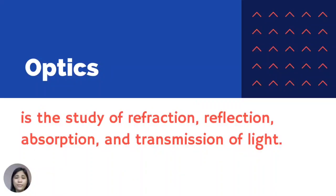To understand light further, you have to learn how it interacts with different objects. This branch of science is called optics. Optics is the study of refraction, reflection, absorption, and transmission of light.